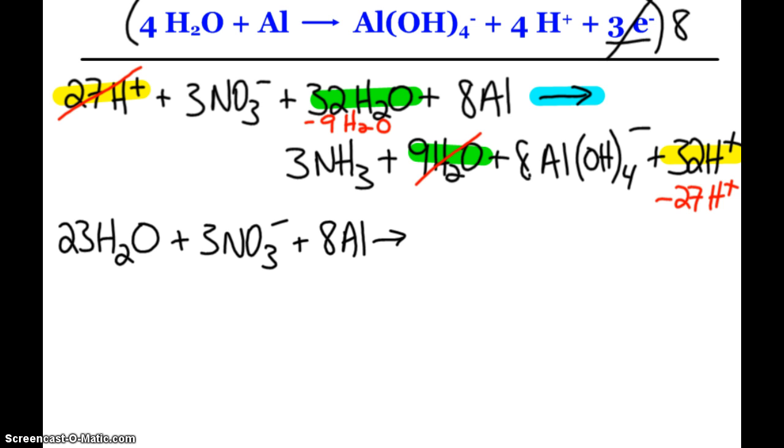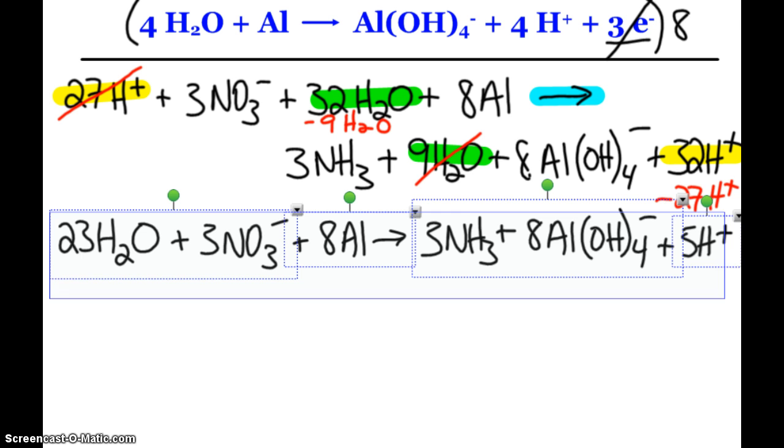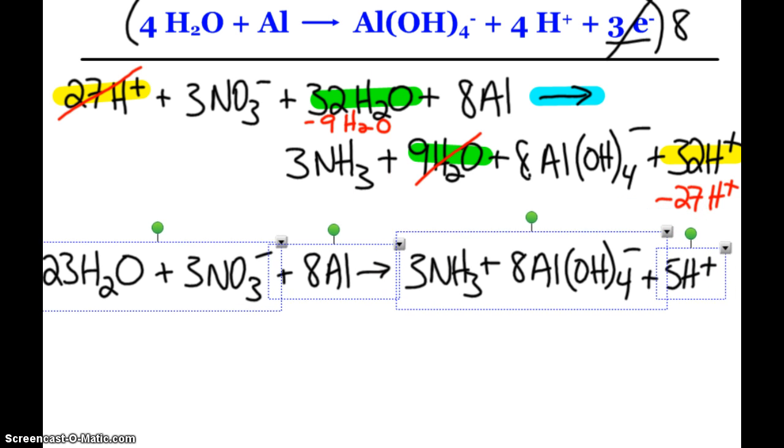So this is going to make the three ammonia, the eight aluminum complex ions, and five hydrogen ions. Alright, so all I did there was clean up my like terms on both sides.